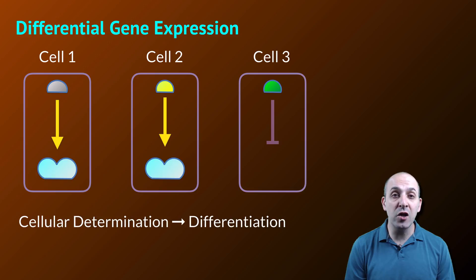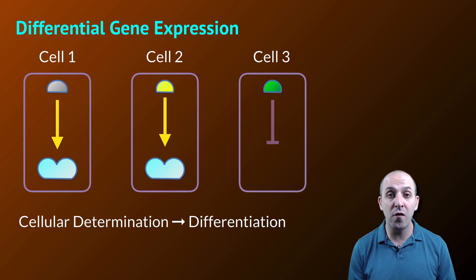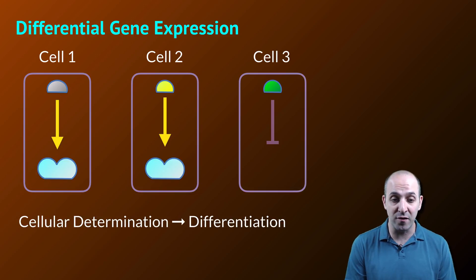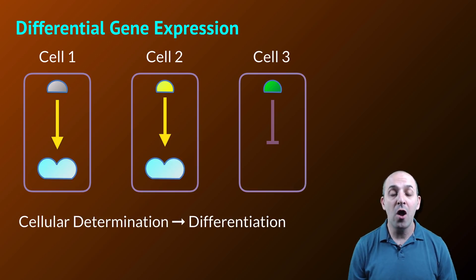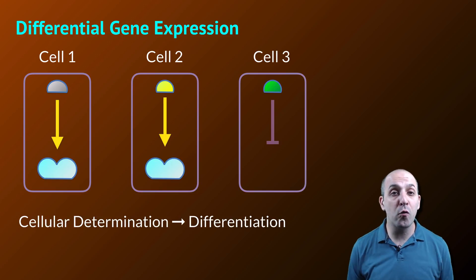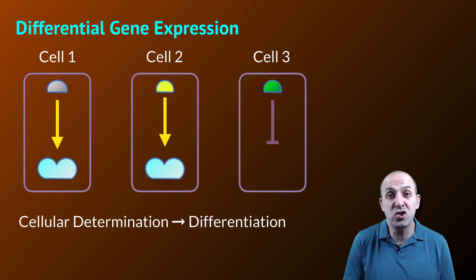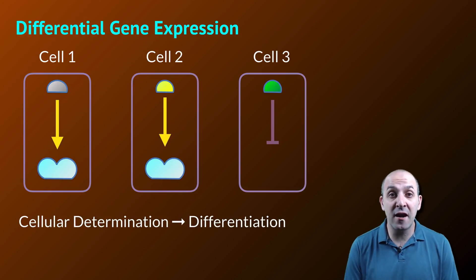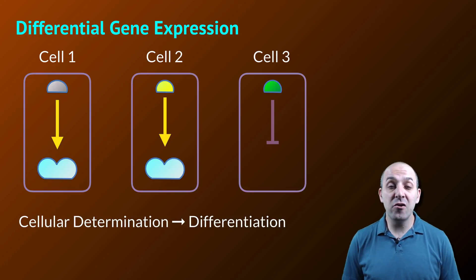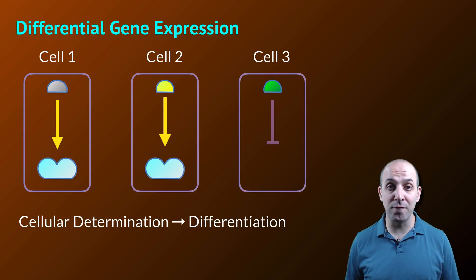This is what we refer to as cellular determination — the changes in gene expression that occur as a result of differences in the transcription factors that are present. It is cellular determination that leads to differentiation, or the development of different types of cells in a multicellular organism. These patterns were established very early on in our development, almost immediately after fertilization occurred.